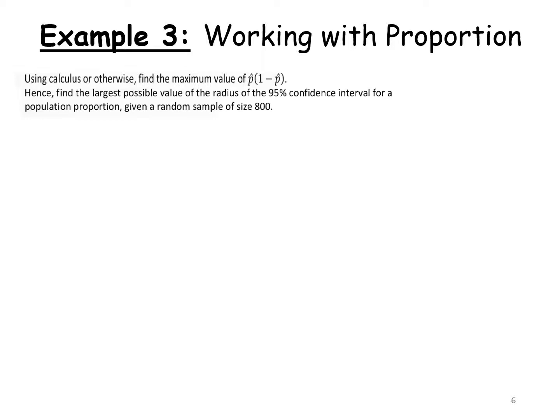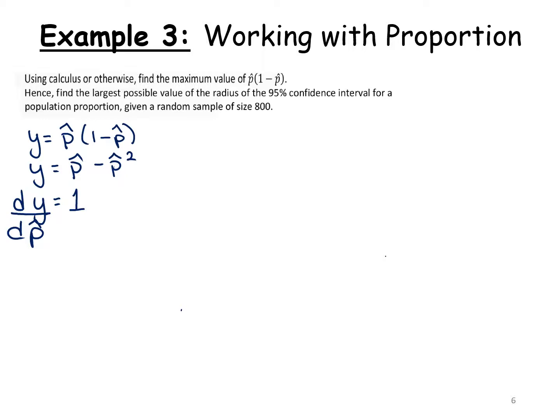Now let's work a little more with proportion — an interesting question from the actual exam papers linking in with calculus. It says: using calculus or otherwise, find the maximum value of p-hat times (1 minus p-hat). I'm going to start by letting y equal p-hat times (1 minus p-hat). You can work with the product rule here, but I'm going to multiply it out to get p-hat minus p-hat squared. Using the rules of calculus found on page 25 — bring down the power and take 1 away from the power — we get dy/dp-hat equals 1 minus 2p-hat.